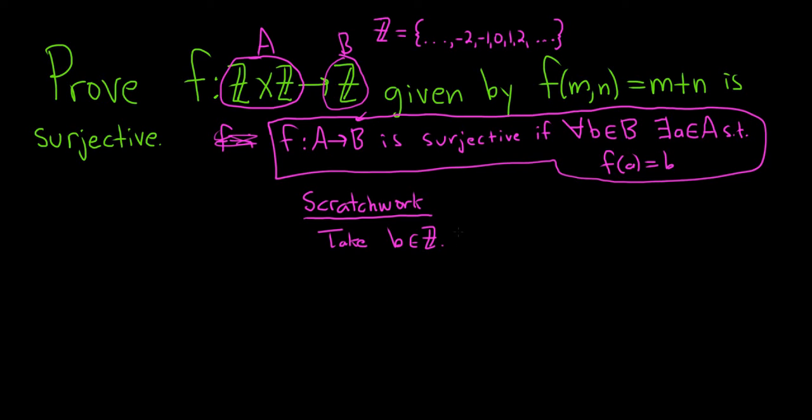And then we need an element here. We need a, which is an ordered pair, right, in Z cross Z, such that f of a is equal to b. Okay, that's what we need right here, f of a is equal to b.